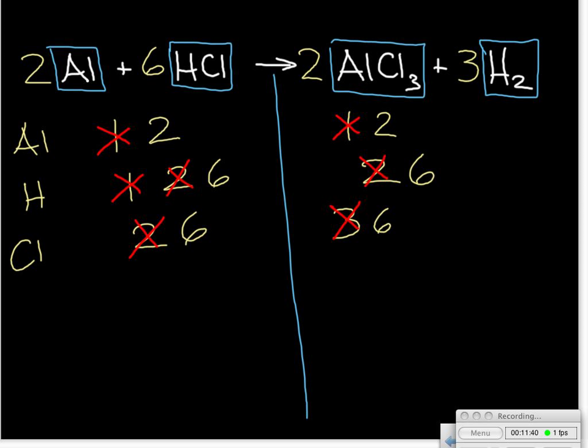Now we verify: 2 aluminum atoms before and after, 6 hydrogen atoms before and after, 6 chlorine atoms before and after — all balanced. Writing out the coefficients, we have 2, 6, 2, and 3 for the four substances. We check whether this is the lowest whole number ratio — we can't divide by 2 because dividing 3 by 2 gives 1.5, which isn't a whole number. So 2, 6, 2, 3 is our final answer for this equation.